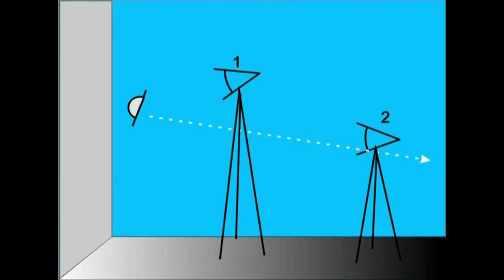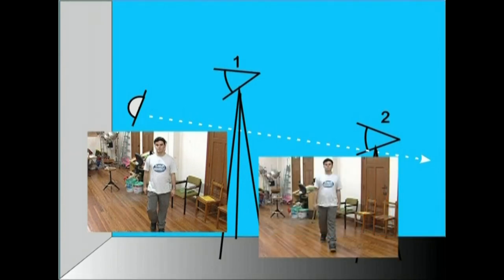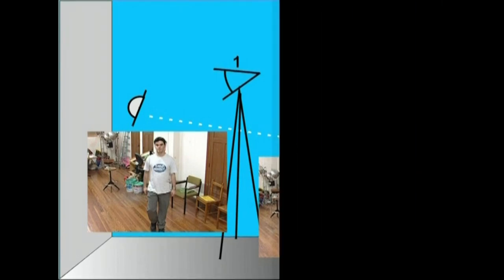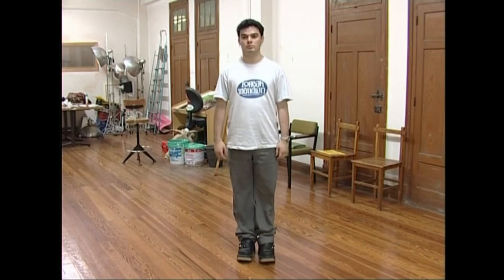Kamera altuera ezberdinetan jarriz, aukera berriak izango ditugu mugimendu hauek filmatzeko. Lehenengo kokagunean, kamera goitik behera begira jarriko dugu aktorea plano orokorrean filmatzeko. Bigarren kokagunean, kamera begi altueran eta begietara zuzendua jarriko dugu eta hemendik ere aktorea plano orokorrean filmatuko dugu. Muntatzerakoan, lehenengo planoan aktorea kuadrotik ateratzen hasten den arteko mugimendua erakutsiko dugu eta bigarrenean mugimenduaren amaia.